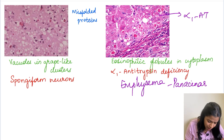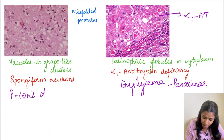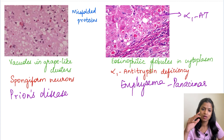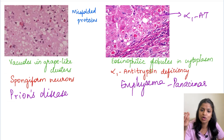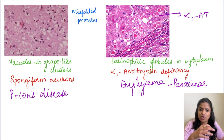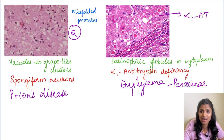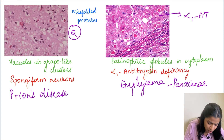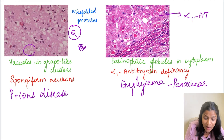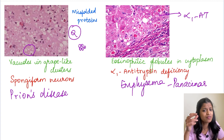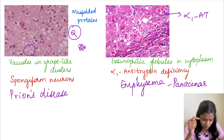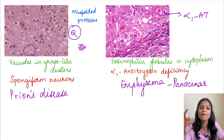Another example of a misfolded protein is prion's disease. Normal prion proteins do not accumulate, but when misfolded, they accumulate and damage neurons. On histopathology the neurons show accumulation of prion protein appearing as vacuoles — called vacuolated or spongiform neurons. This characteristic image of spongiform neurons appears like grape-like vesicles or tiny white spaces inside the cytoplasm. This is characteristic of prion's disease and will be covered in detail in the CNS chapter.